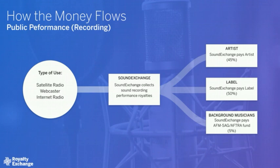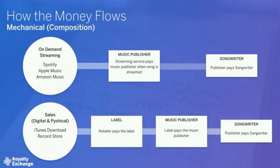For public performance royalties due on the sound recording, a different organization called SoundExchange does the collecting. Satellite radio, webcasters, and internet radio stations pay the performance royalty to SoundExchange, and SoundExchange pays the artist 50%, the label 45%, and 5% to a fund set up through SAG-AFTRA to pay background and session musicians. On the reproduction side, the mechanical royalty due to the songwriter and publisher is paid differently depending on the format. For on-demand streaming services, the service pays the publisher directly, and the publisher pays the songwriter their cut. For retail sales — digital or physical — generally the retailer pays the label, and the label passes the royalty to the publisher, who then pays the songwriter.